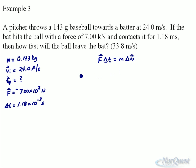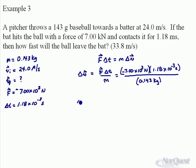So the change in velocity here will equal force change in time divided by mass. Put the numbers in, negative 7.00 times 10 to the 3 newtons times change in time, 1.18 times 10 to the negative 3 seconds, divided by the mass of the object, 0.143 kilograms. If you punch that in, we'll be able to figure out what the change in velocity is. That's not what the question is asking for, but we need the change in velocity to find the final velocity.